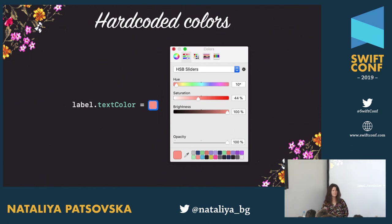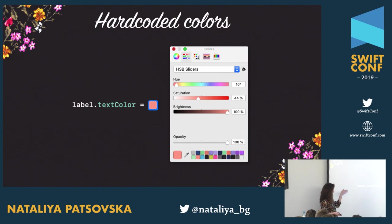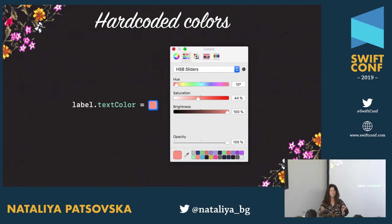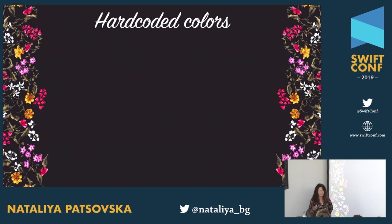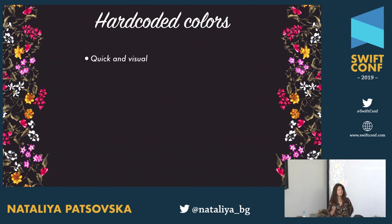Hard-coded colors are the simplest way you can get a color. Either in Interface Builder you select from a picker, or in code you use some initializer or color literals. Every time you select a new color it's not reusing another one — you create a new instance with no connection to the others. They're good because they're quick and visual, and in a lot of cases this is exactly what you need.